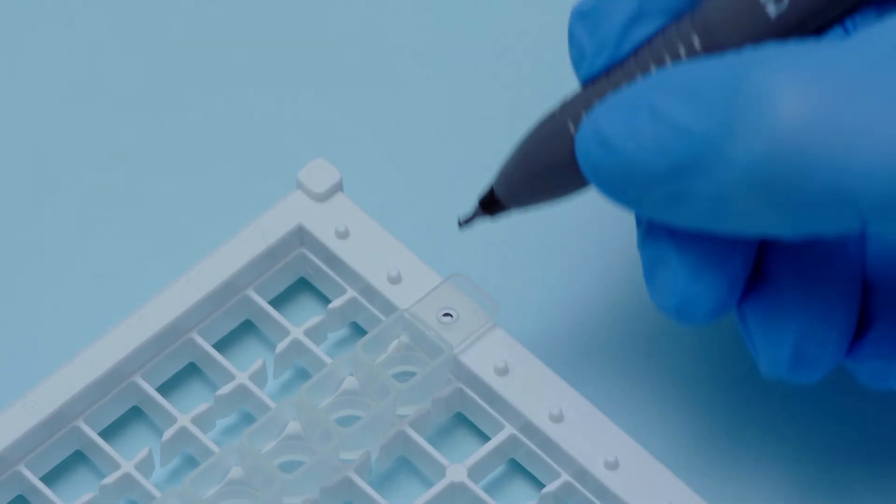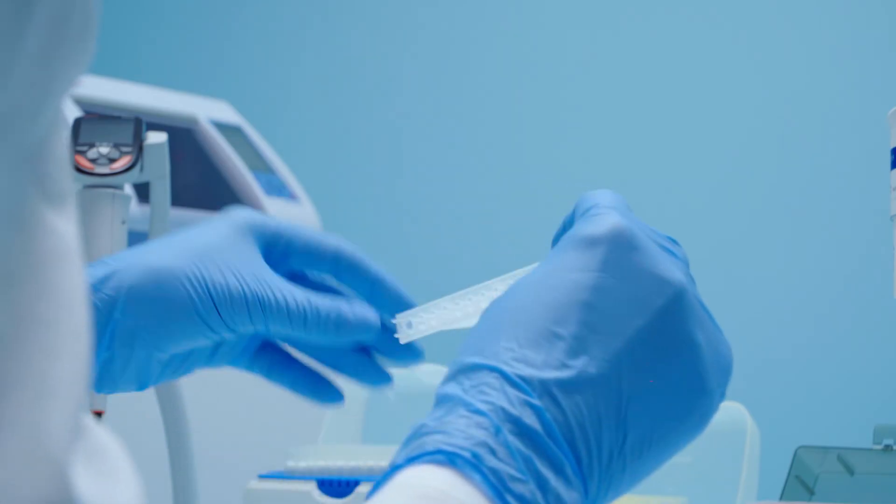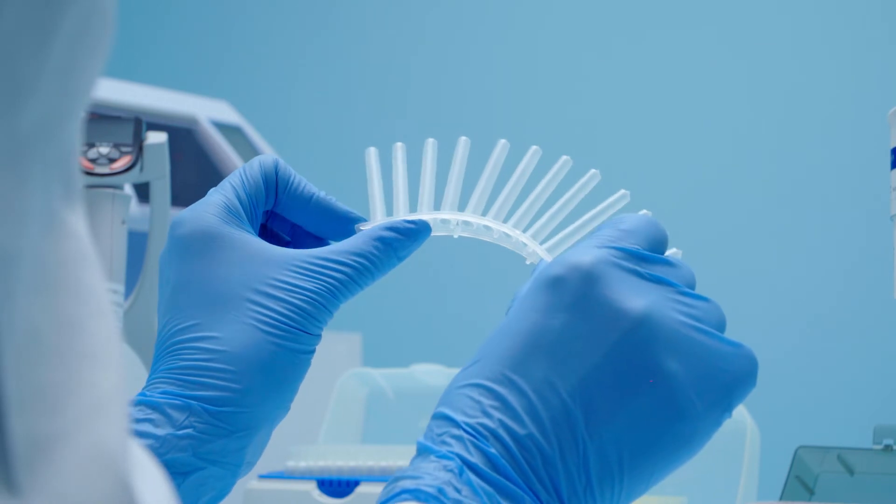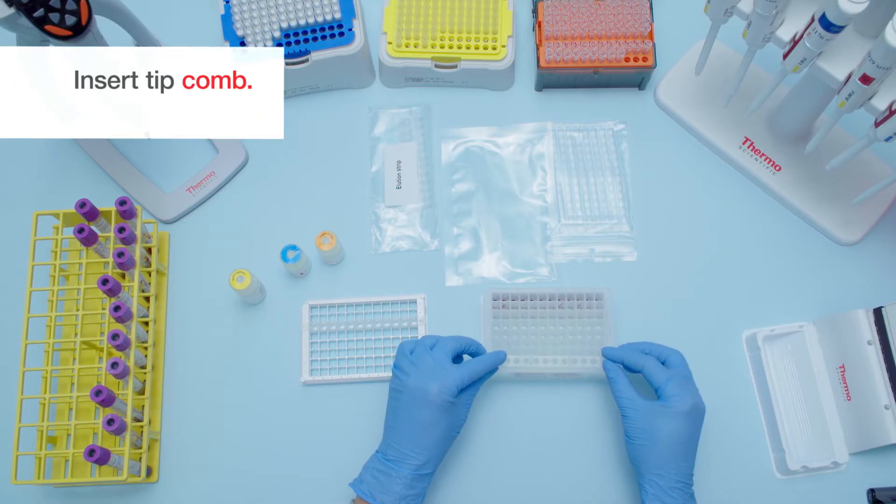Mark your elution strip on one end to prevent sample mix-ups in the next steps. Remove one tip comb from the bag and gently flex to straighten the combs and insert the tip comb into row H.